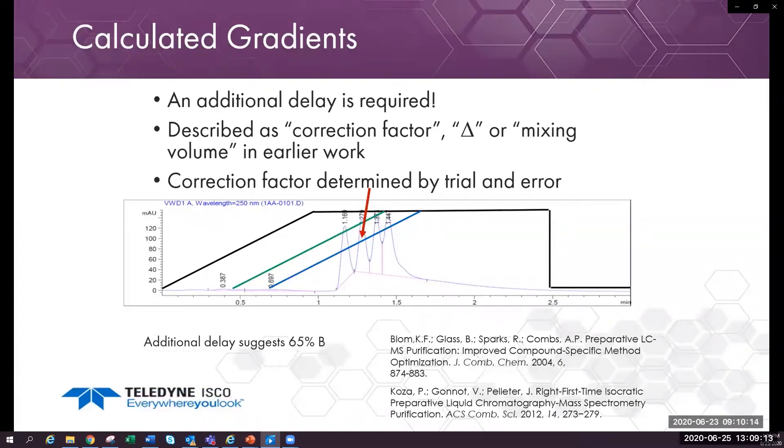Teledyne ISCO explored this type of calculation and found it wasn't generic. A change in system needed a new correction. With this additional correction, the second peak is expected to elute at about 65% B.